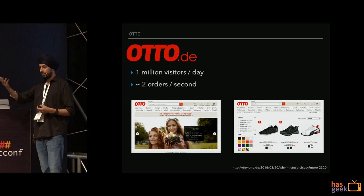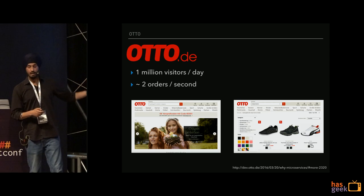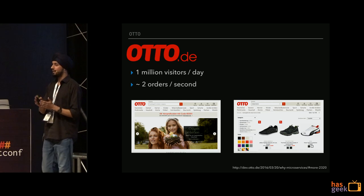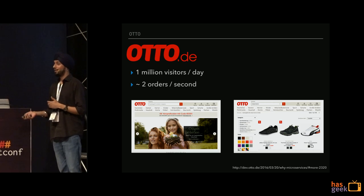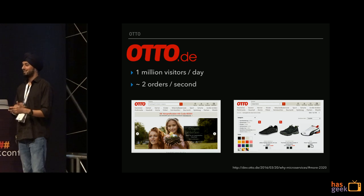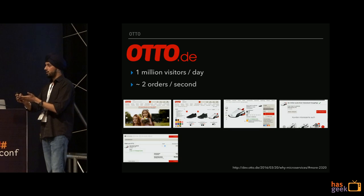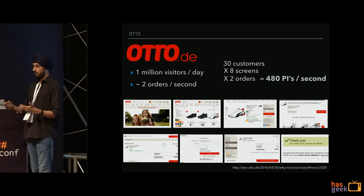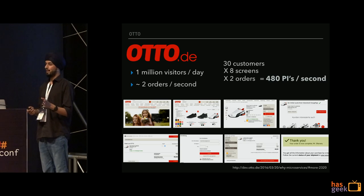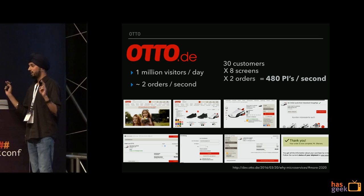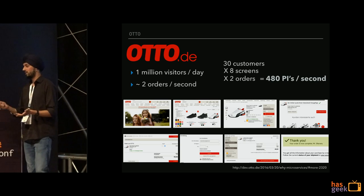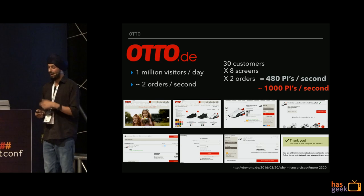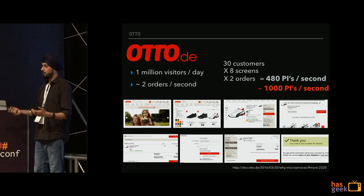Given those public statistics, we can extrapolate: if it takes around eight screens to place your order — you pick a product, add it to cart, proceed to checkout — and one in 30 customers converts, we get about 480 page impressions every second. On their big sales days — what they call 'boom days' — we saw roughly a thousand page impressions every second. I'm not trying to claim this is the largest traffic — there are companies with much larger traffic — but what makes it unique is the e-commerce context.